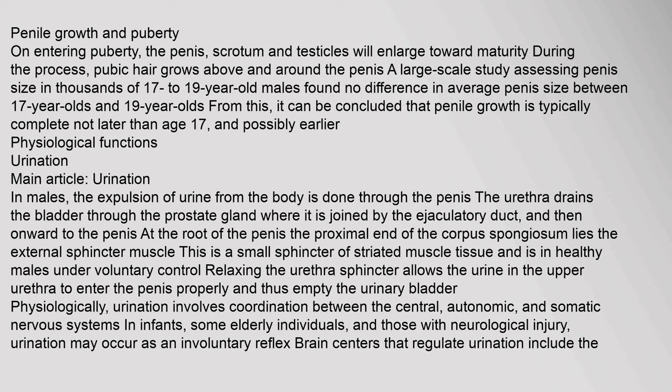In males, the expulsion of urine from the body is done through the penis. The urethra drains the bladder through the prostate gland where it is joined by the ejaculatory duct, and then onward to the penis. At the root of the penis, the proximal end of the corpus spongiosum lies the external sphincter muscle — a small sphincter of striated muscle tissue that is in healthy males under voluntary control. Relaxing the urethra sphincter allows urine in the upper urethra to enter the penis and empty the urinary bladder.